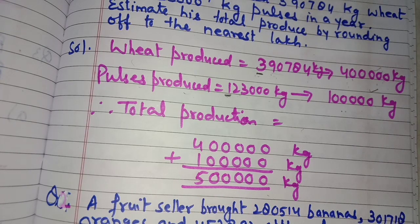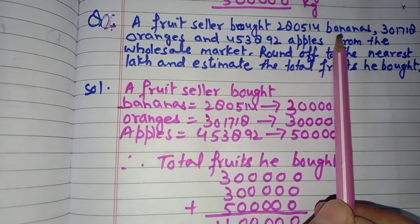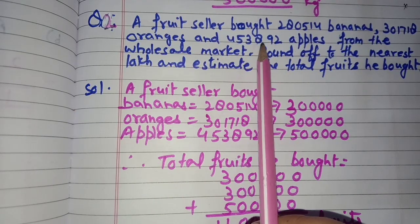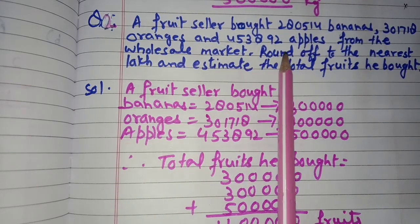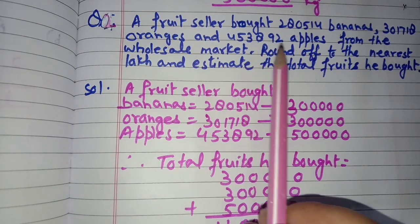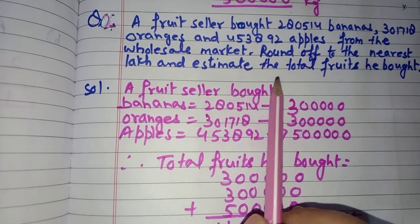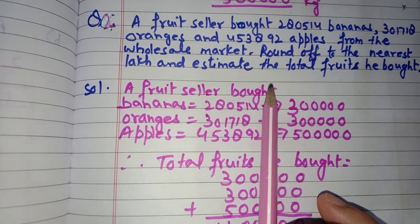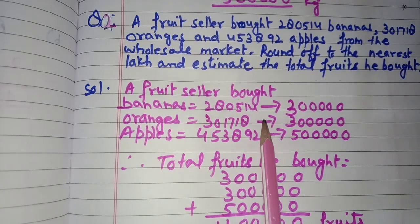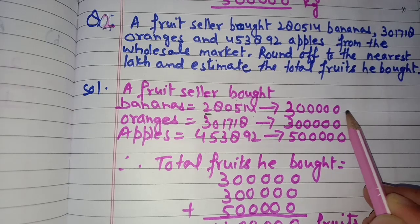Question number 2: A fruit seller bought 2,80,514 bananas, 3,01,718 oranges, and 4,53,892 apples from the wholesale market. Round off to the nearest lakh and estimate the total fruits he bought. Bananas: 2,80,514, rounded off to the nearest lakh — it will be rounded off to 3 lakh.